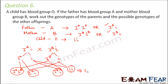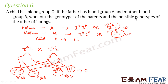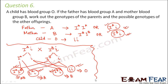So the genotype of the parents is I^A i and I^B i. The possible genotypes for other offspring are I^A I^B (blood group AB), I^A i (blood group A), I^B i (blood group B), and ii (blood group O). For your own understanding, if you cross homozygous parents, none of the offspring would have blood group O.